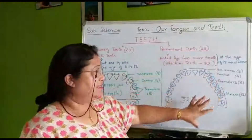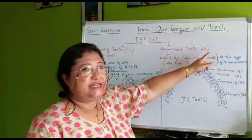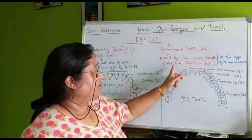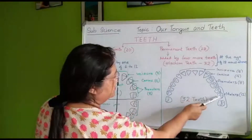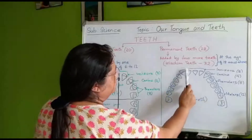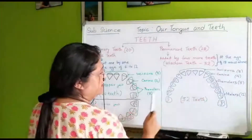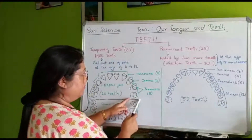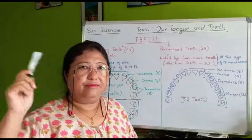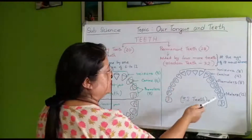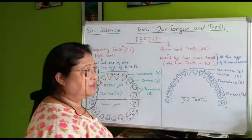Next we have permanent teeth. All together we first have 28 permanent teeth, and adding four more wisdom teeth gives us 32. In permanent teeth, the structure is the same — front incisors, then canines, then pre-molars — but we also have molars added at the back. The temporary teeth did not have molars. When a child reaches or crosses 18 years of age, these new molar teeth grow, and they are also called wisdom teeth — in Nepali, buddhi daat.